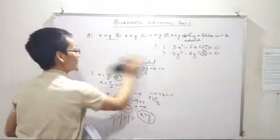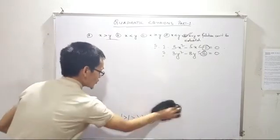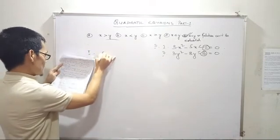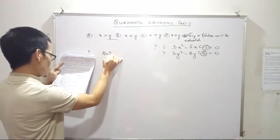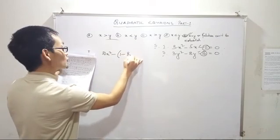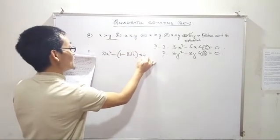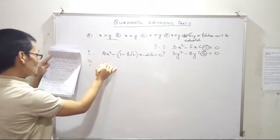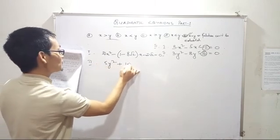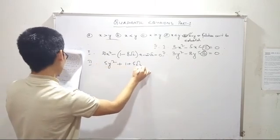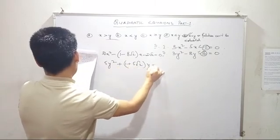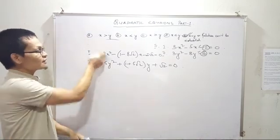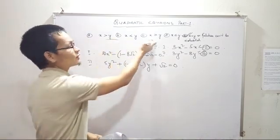Question number three: 4x squared minus 1 minus 8 root over of 2x minus root 2 equal to 0. And: 5y squared plus 1 plus 5 root 2 times y plus root over of 2 equal to 0. So: is x greater than y, x less than y, x greater than — or no relationship required?